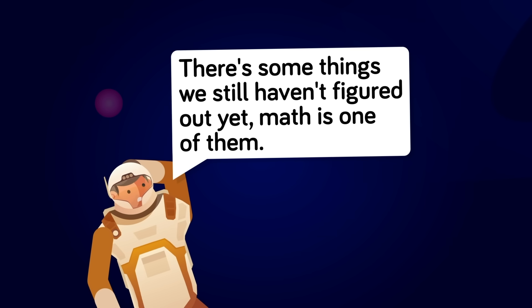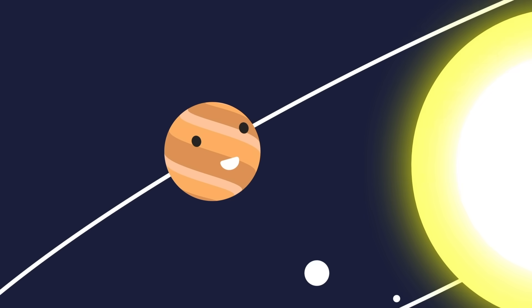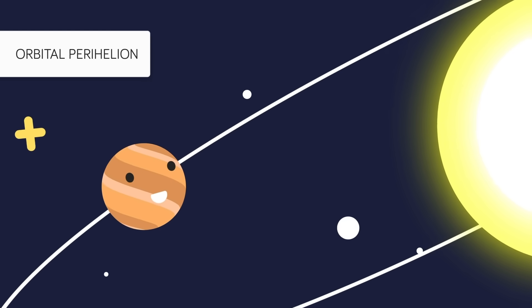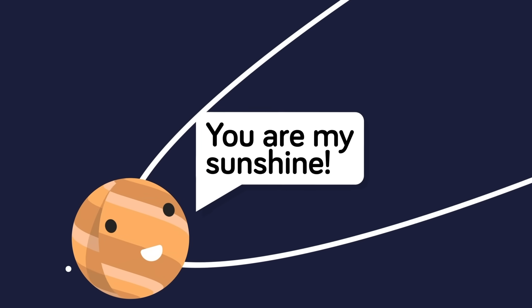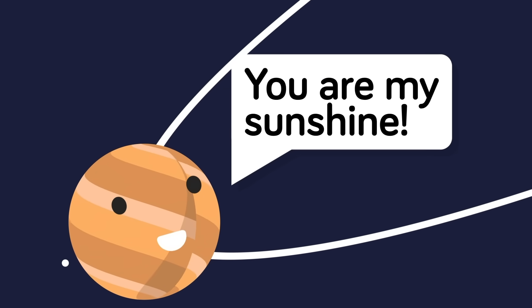And as these objects approach the sun at the closest point between the two bodies, known as the orbital perihelion, this predictable point in space is also observed to move unexpectedly.